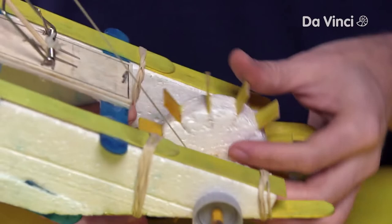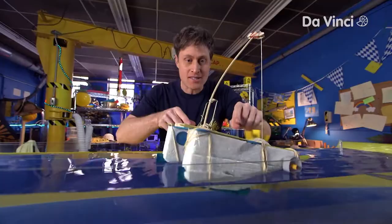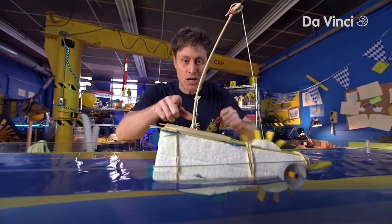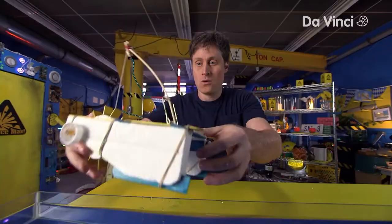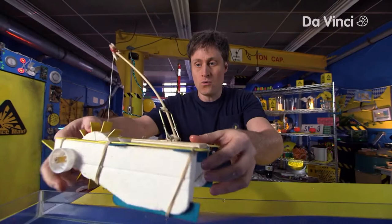The paddle wheel turns because the mousetrap is transferring energy that we put in earlier, and it goes all the way. We stored the energy in the tension of the spring. Now that tension is pulling the mousetrap, the stick, and the string, which turns the paddle wheel and makes the boat go.